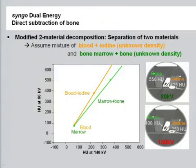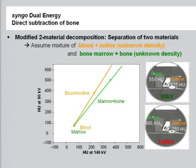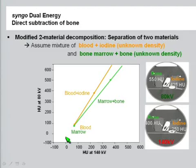Another very important application is two-material decomposition. I will describe a method based on images, not raw data. You reconstruct two different sets of images for each KV spectrum and then manipulate the data to separate between two materials. The diagram shows Hounsfield units at the low KV and high KV spectrum — every pixel is represented as a point. For example, blood is one point, a mixture of blood and iodine is another, and all points on the orange line represent different ratios of a mixture of bone and iodine.